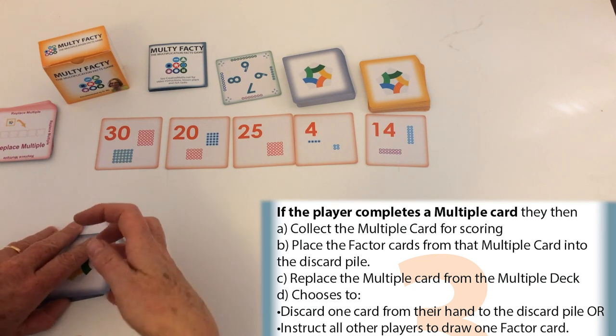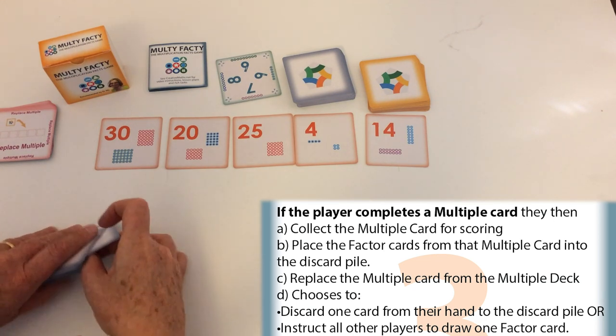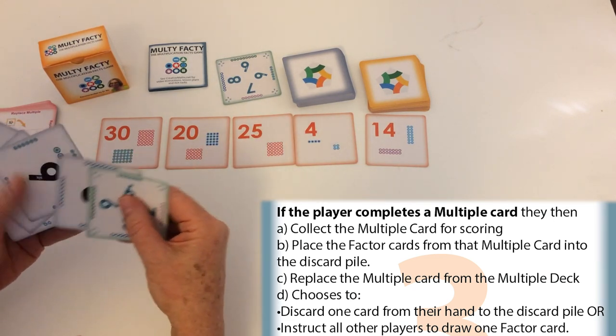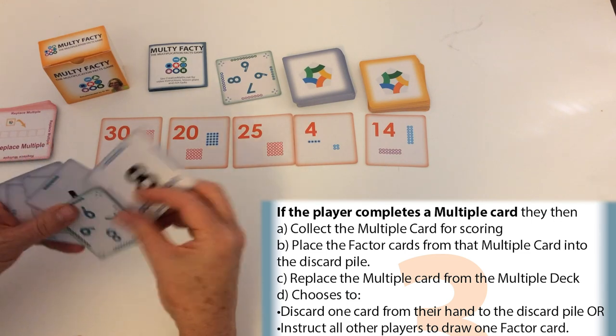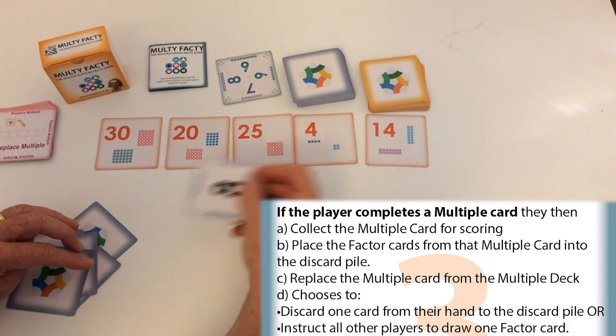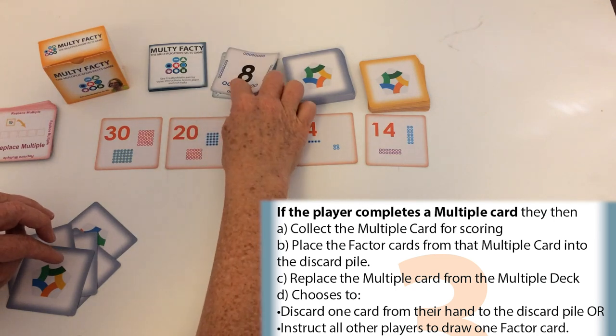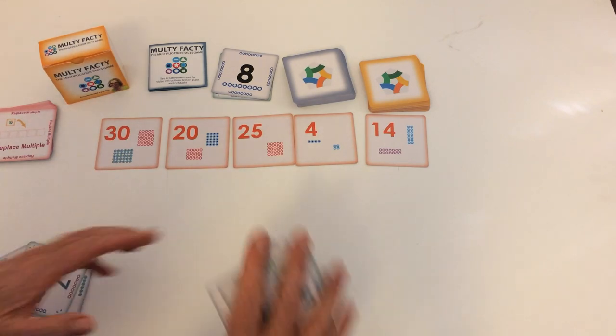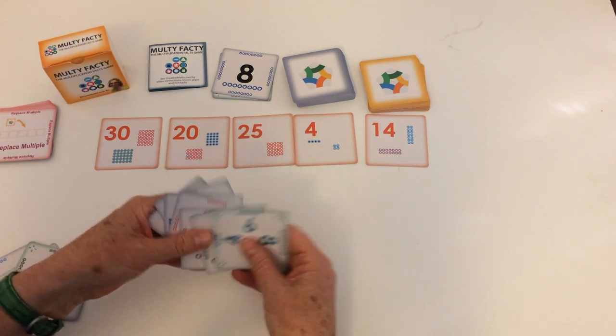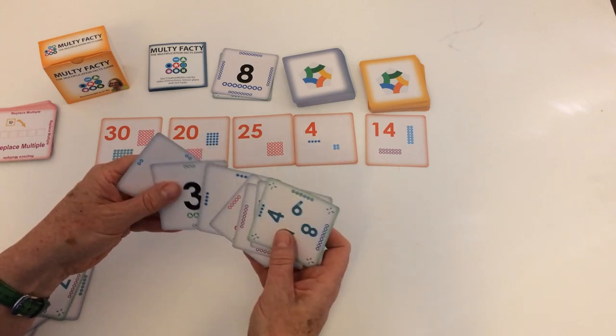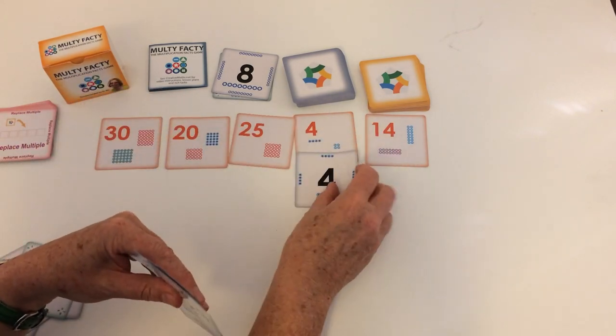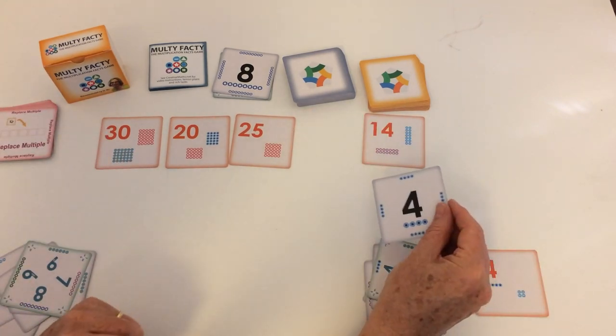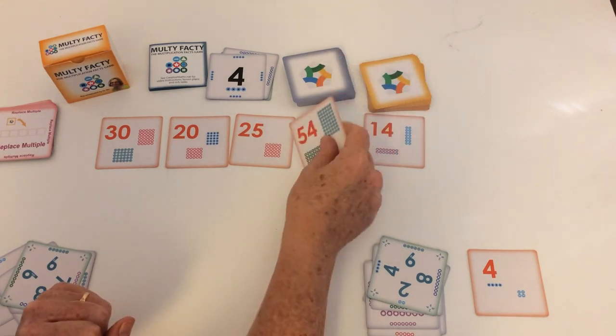And then this player has the choice to either discard one of their cards because getting rid of cards is good, or making the other players all pick up one card. So in this case I'm going to throw out an eight because I can see I'm not going to be able to place an eight very easily. So I'm going to throw that one out. So that's my turn finished. Now it's my opponent's turn. Oh, have I got a four anywhere? Yes I do. I don't want to use up my wild card if I don't have to. So I'm going to play my four and I've scored that multiple. And that gets discarded. We get a new multiple.